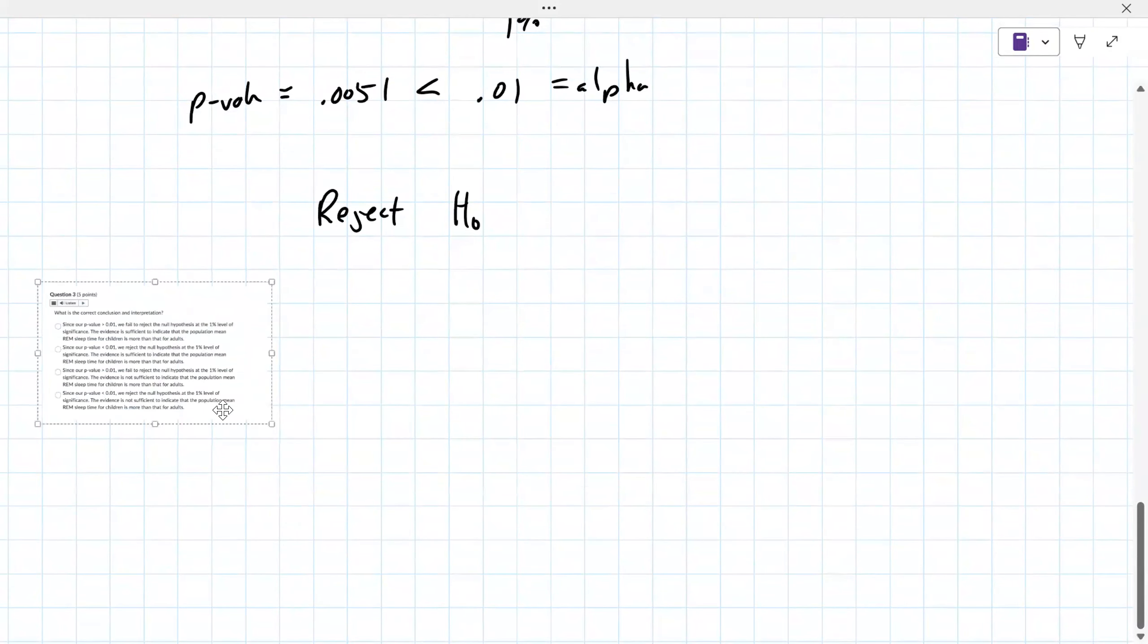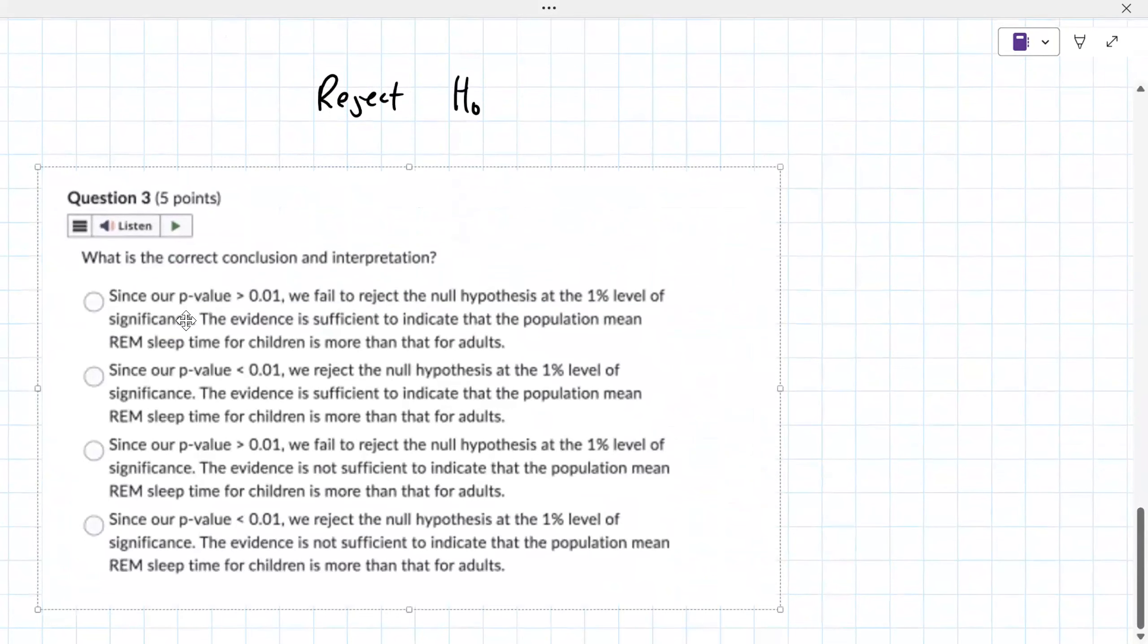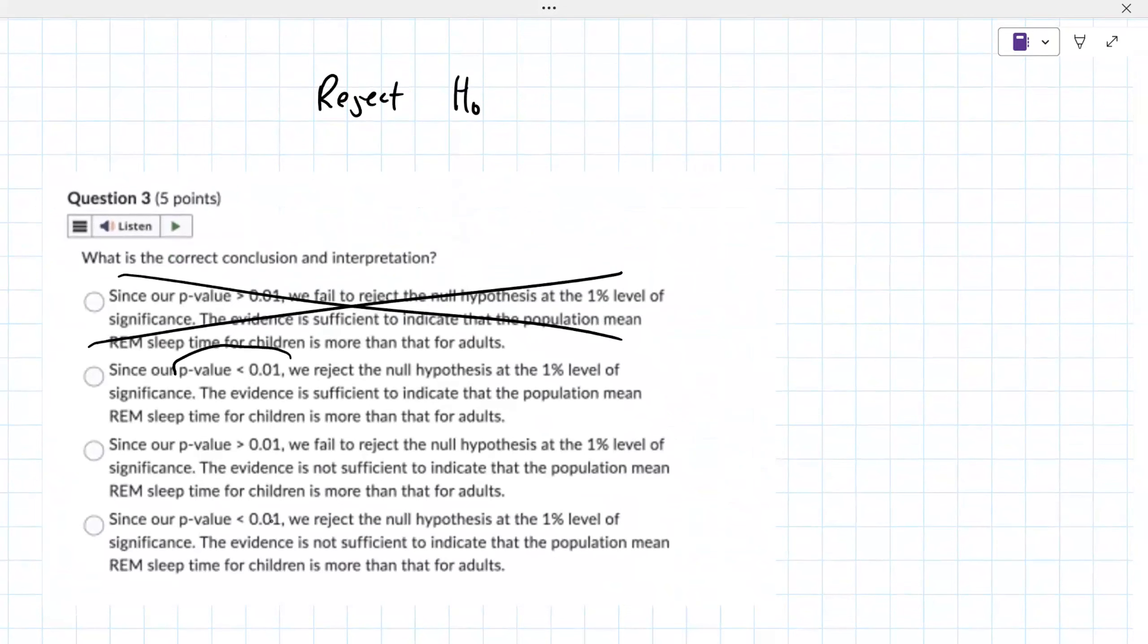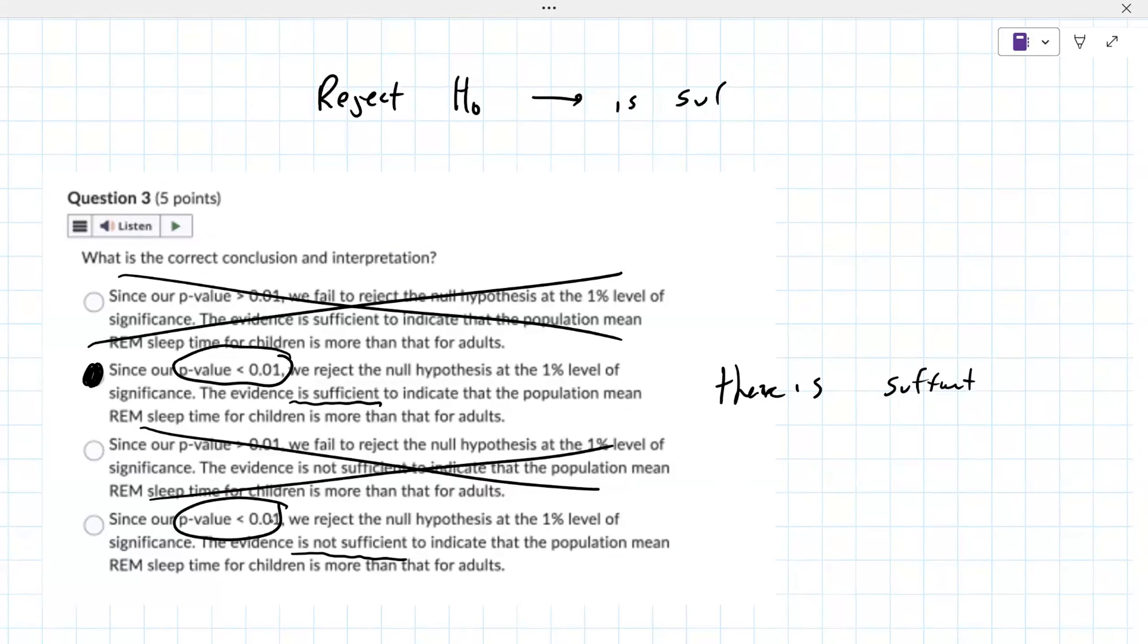That's what question three is referring to. We're looking for the language that says since our P value is less than, so that means this one is okay and this one is okay. Whenever you reject, you can say there is sufficient evidence - that's the only difference. So there is sufficient evidence when you reject.